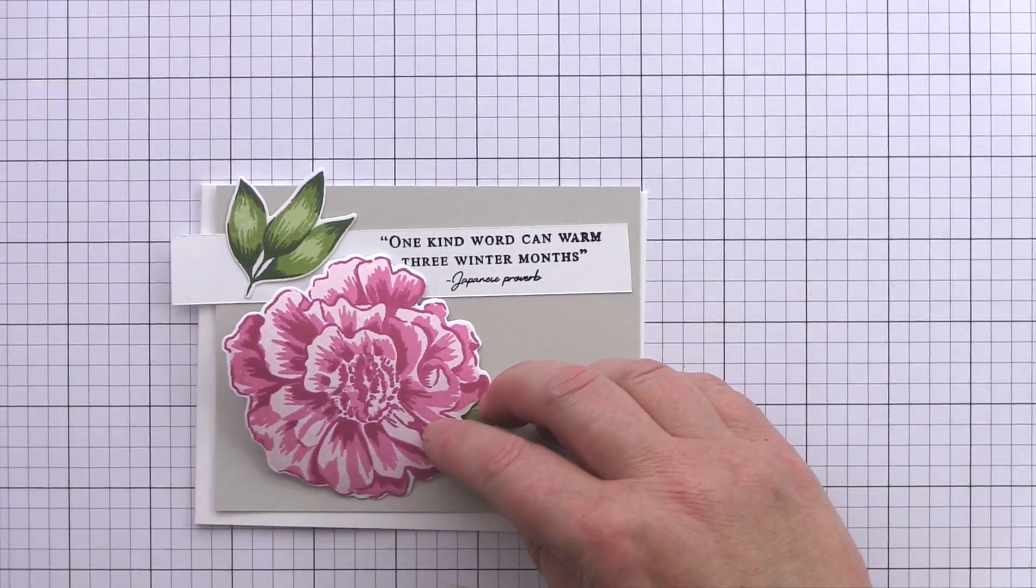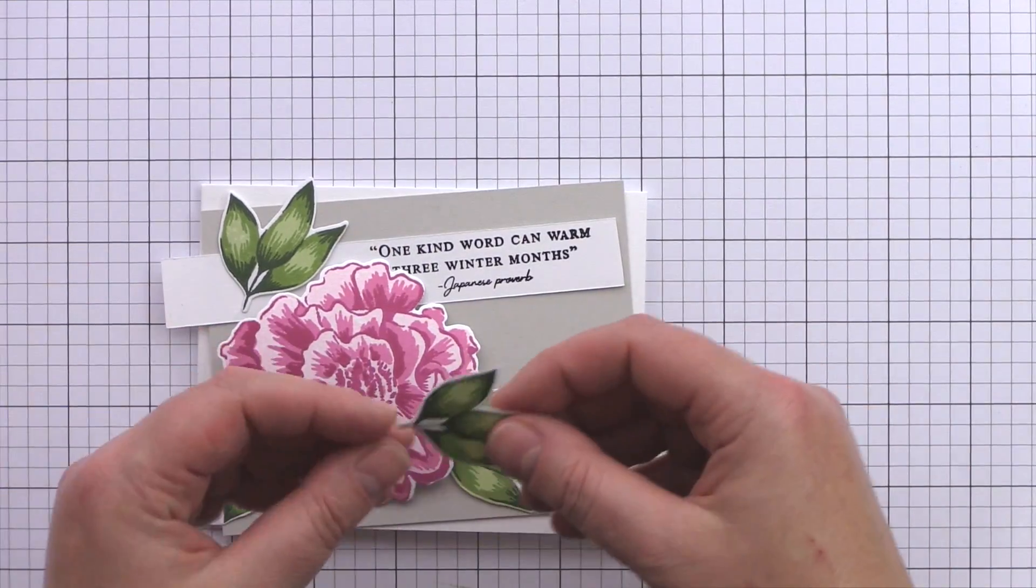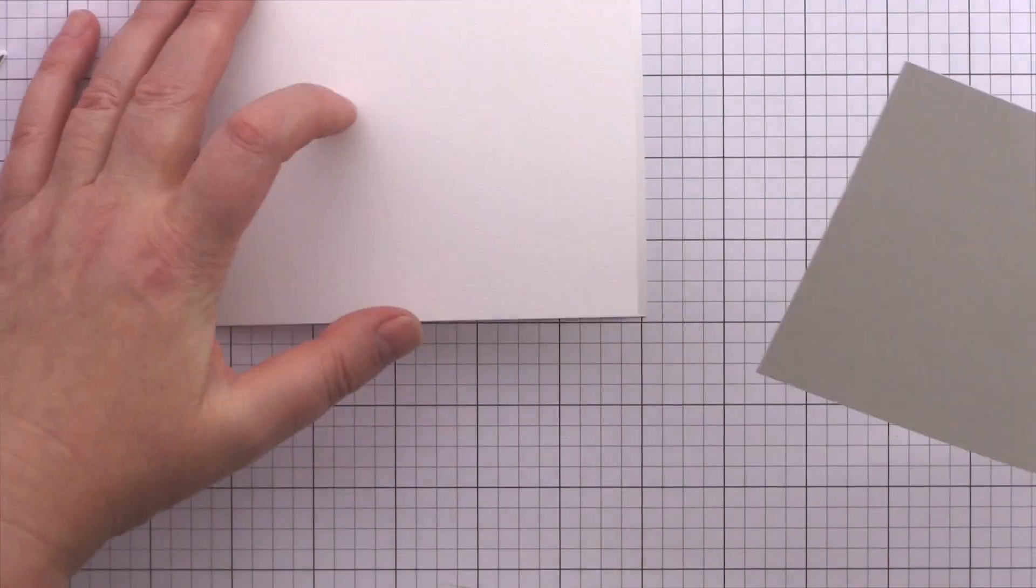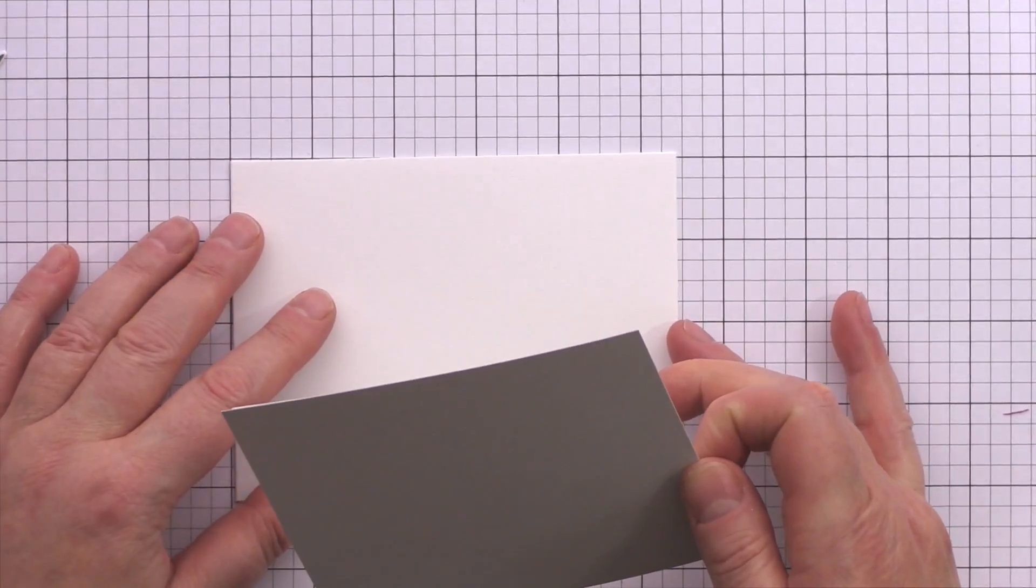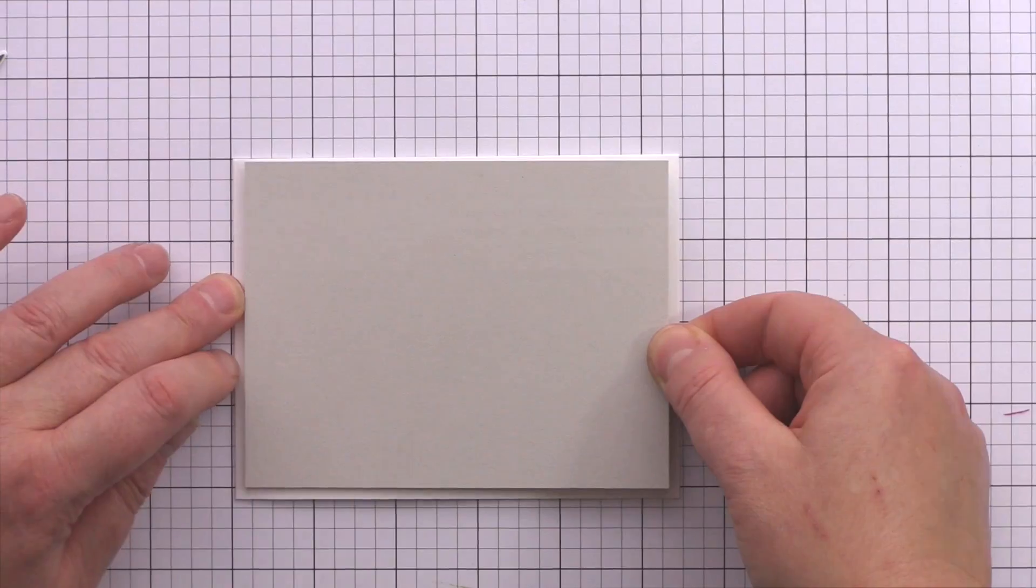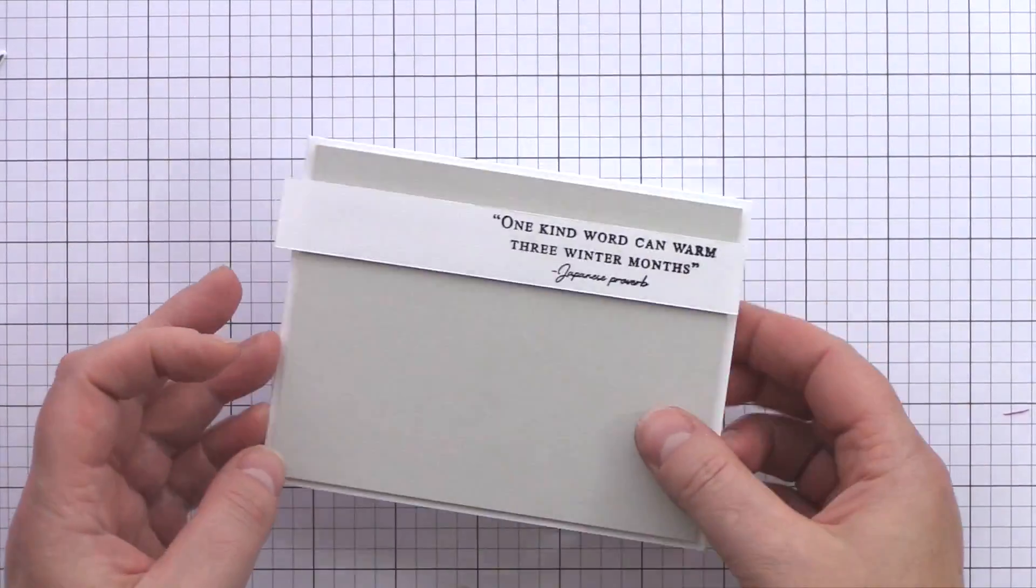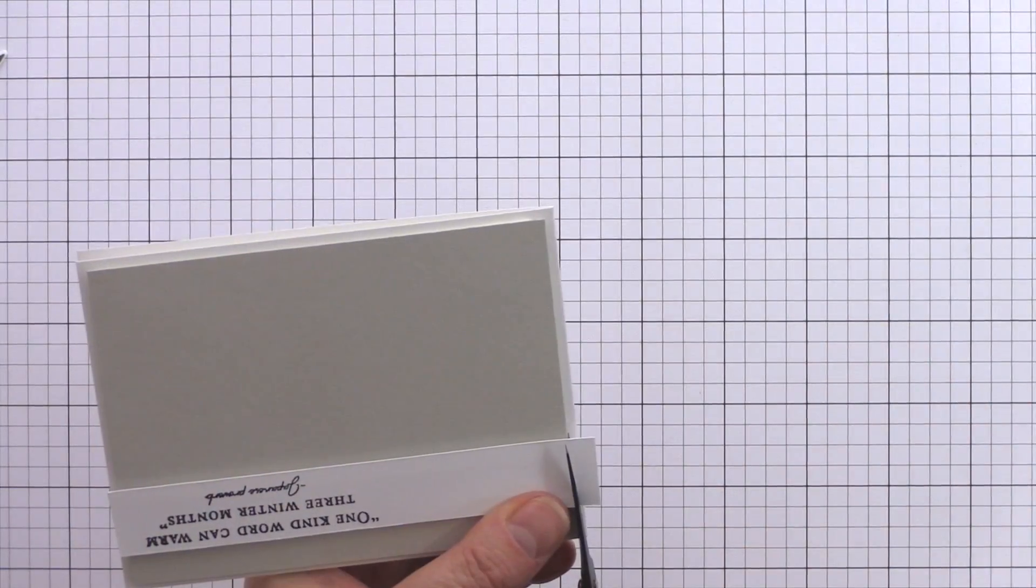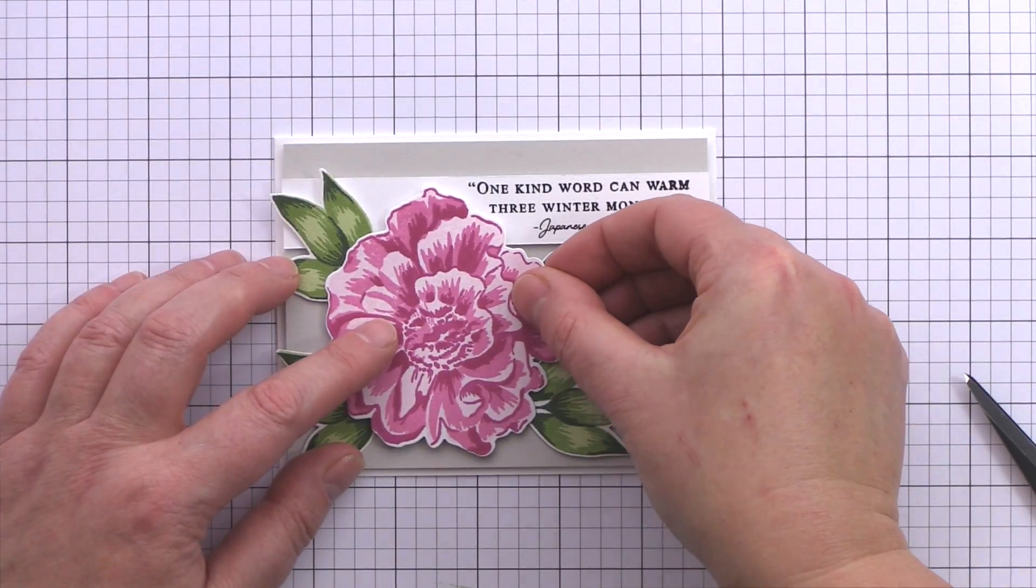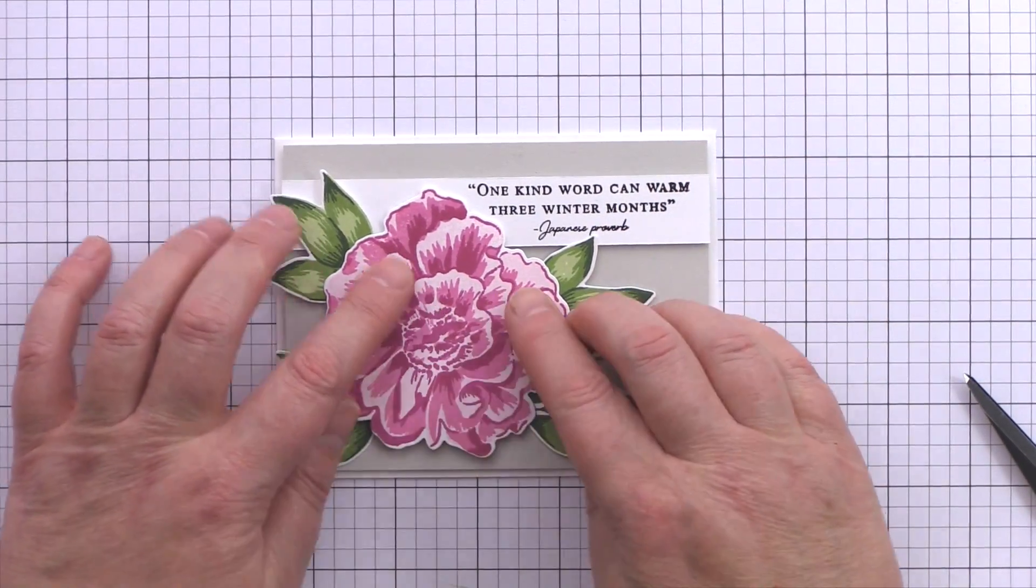With all the elements now complete it's simply a case of adhering them to the card base. I really like using foam adhesive as I like the extra dimension that it gives. I've added the foam adhesive to the back of the grey layer, white sentiment strip, flower and the leaves and then starting from the base up and adhering them one by one. I trimmed the overhang of the sentiment strip with scissors and then added the leaves in place first before finally positioning the camellia.